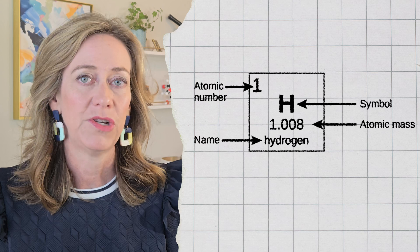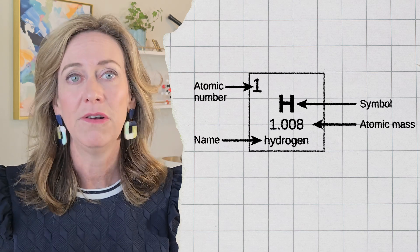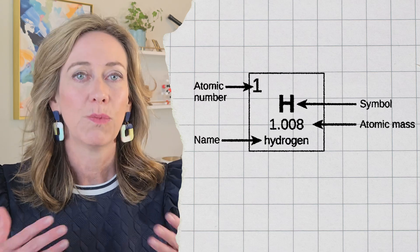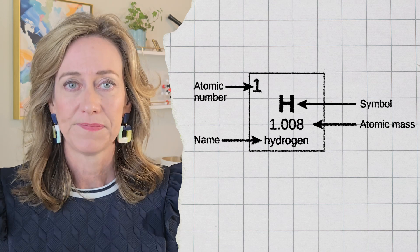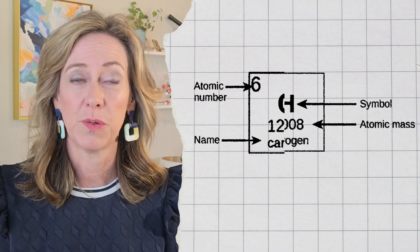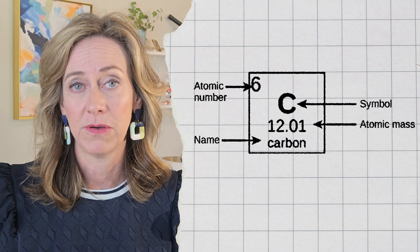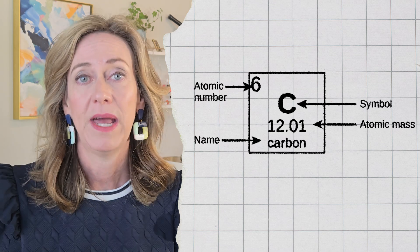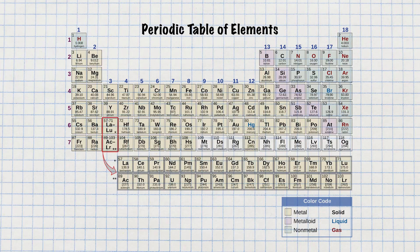The atomic number is the number of protons found in the nucleus. Hydrogen, the smallest and most abundant element in the universe, has one proton, so its atomic number is one. Carbon, the backbone of all organic molecules, has six protons, so it has an atomic number of six. You'll find this number located for each element in the periodic table.